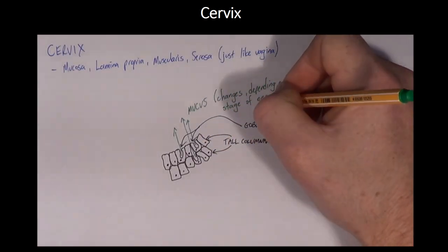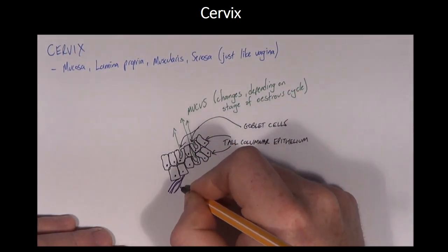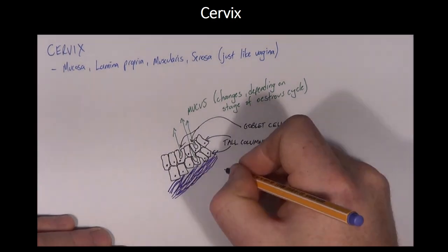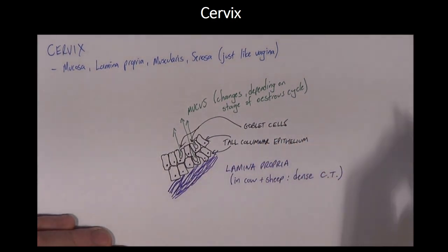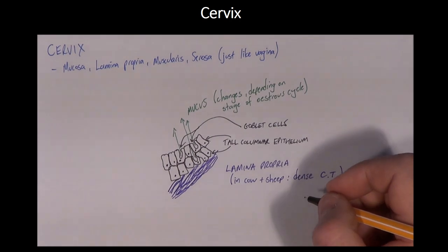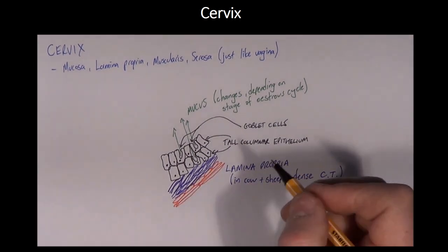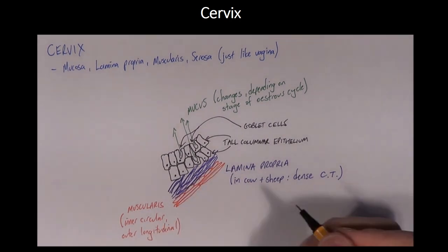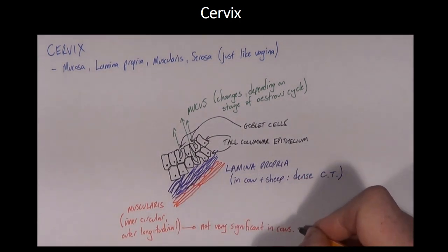The inner circular and outer longitudinal layer of the muscularis are present as they are in the vagina. In the cow, the smooth muscle of the muscularis is relatively insignificant compared to the dense connective tissue that forms the lamina propria. The mare's cervix, on the other hand, comprises mostly smooth muscle. In the ewe, there are many cervical crypts that may have secondary or even tertiary folds. These act as sites of sperm storage after mating.